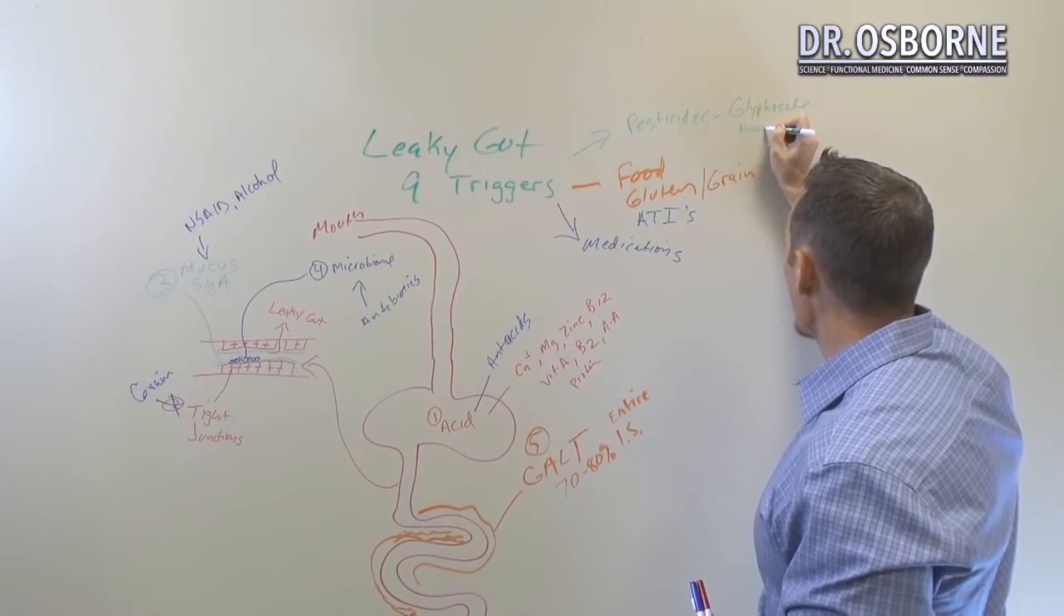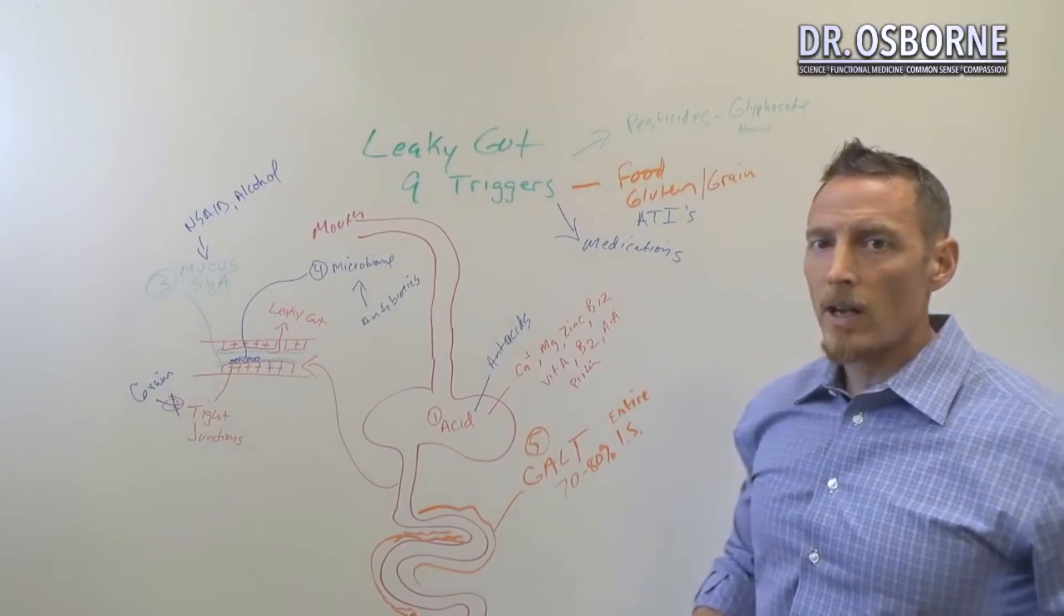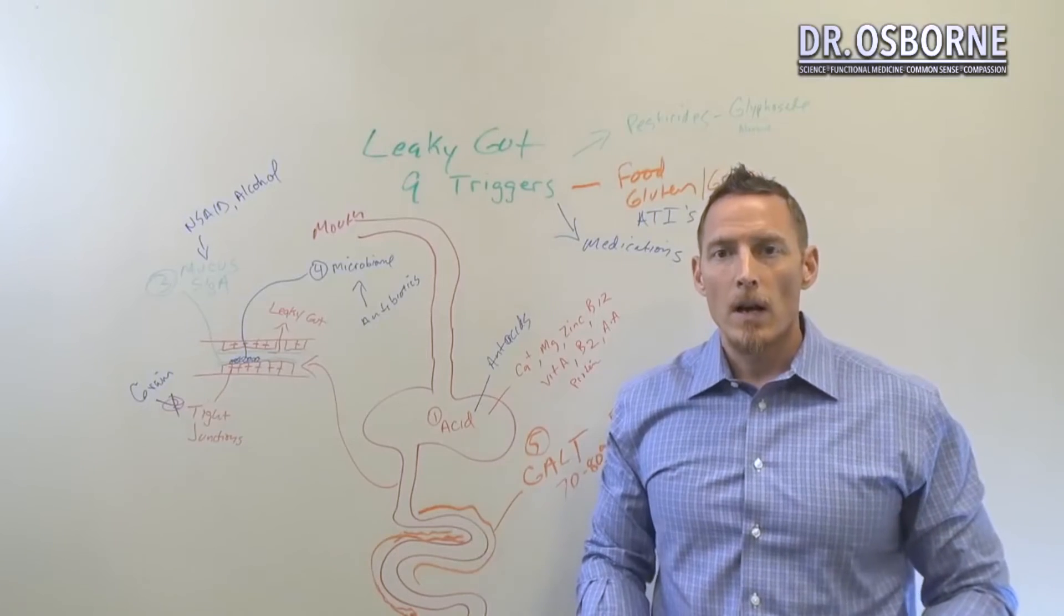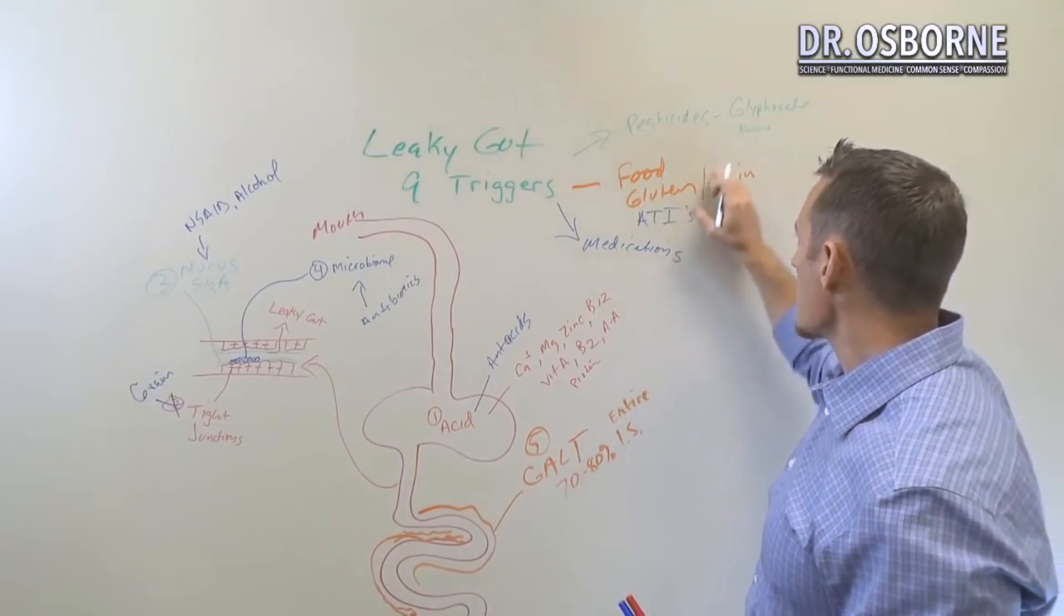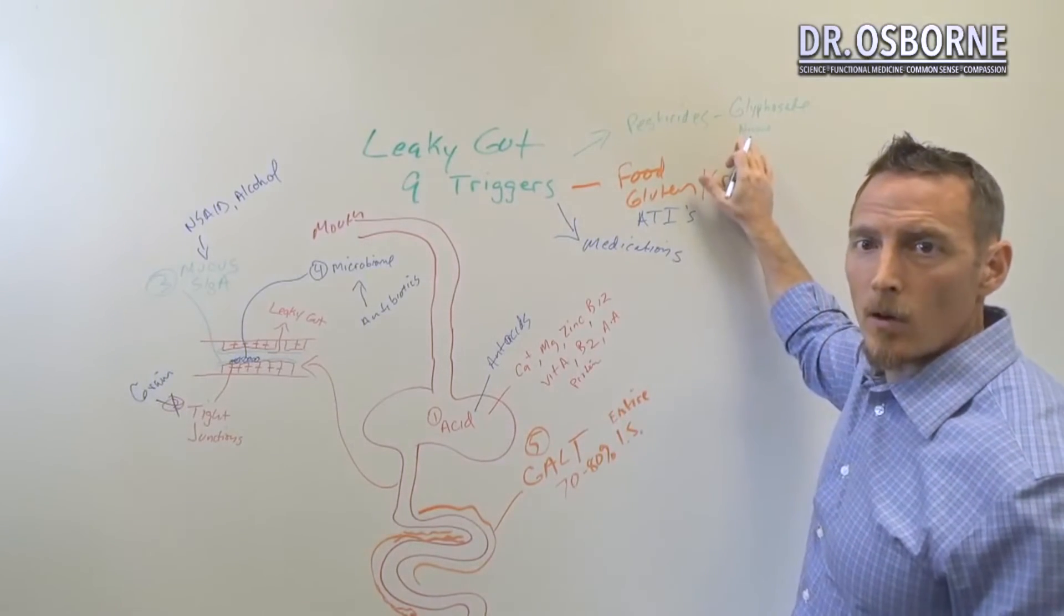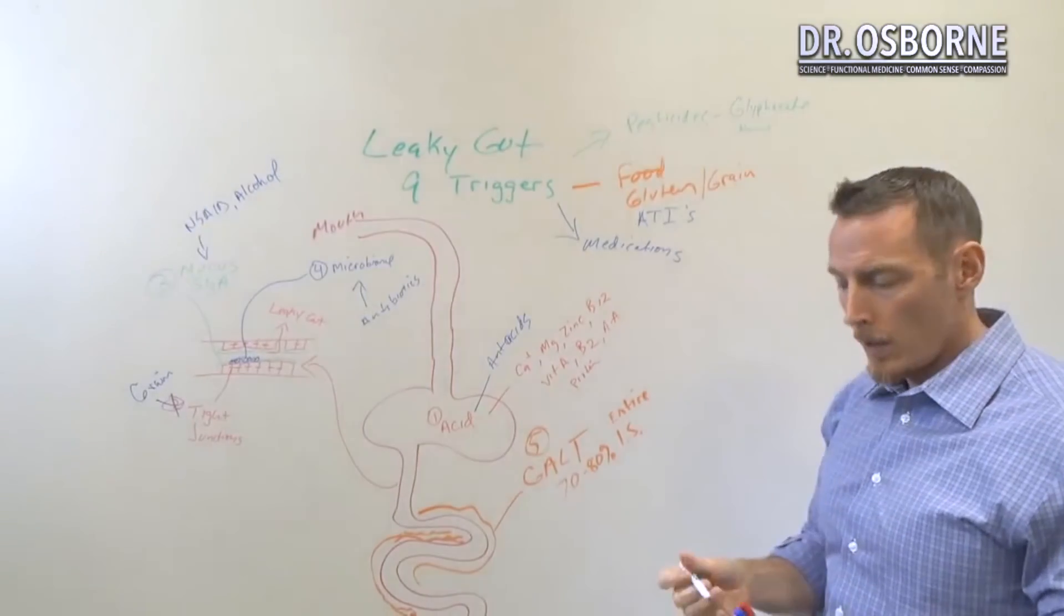And when I say pesticide, understand I'm talking about the category of pesticides, herbicides, weed killers, et cetera. So like atrazine, which is commonly used on crops today is another example of one.